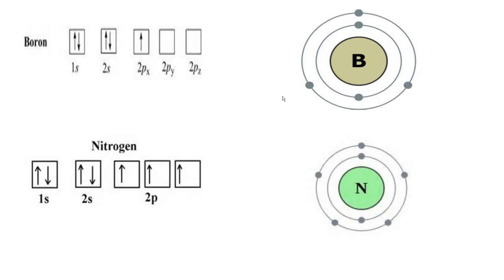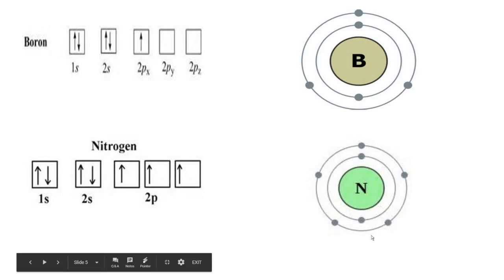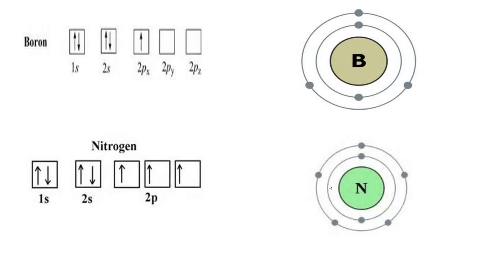Here you can see that boron has configuration 1s2, 2s2, 2p1 — two inner electrons and three outer electrons. These three electrons can be lost and boron forms a positive 3 oxidation state. On the other hand, nitrogen has configuration 1s2, 2s2, 2p3. You can see that three vacancies are available, so it can have a minus 3 oxidation state. Or, since it has five outer electrons, and five is the group number of nitrogen (group 5A), it can have a positive 5 oxidation state as well.